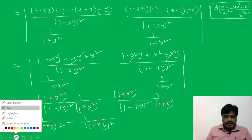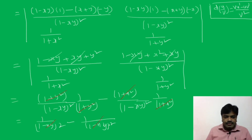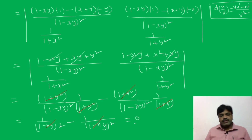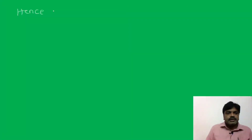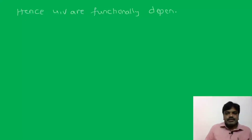Finally, this value is equal to 0. Therefore, u and v are functionally dependent.